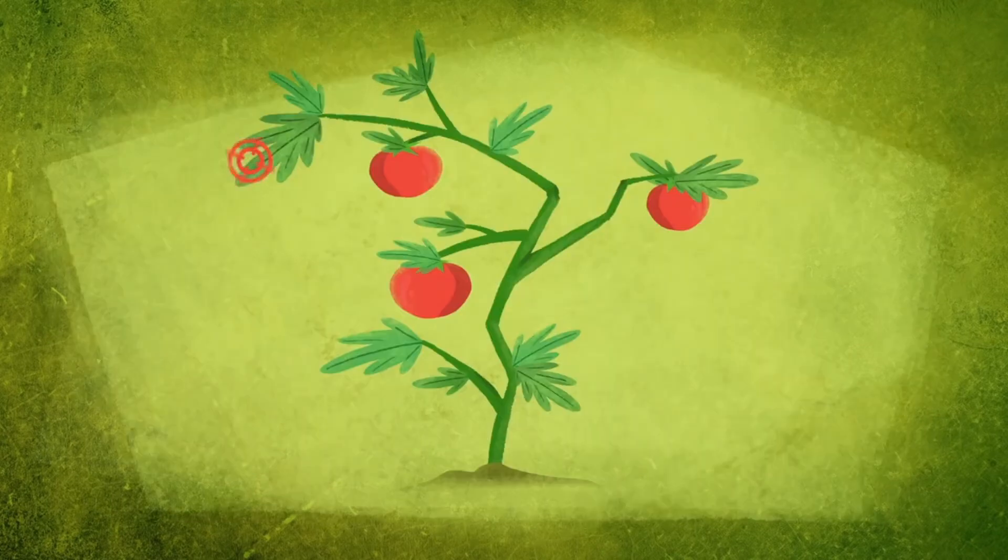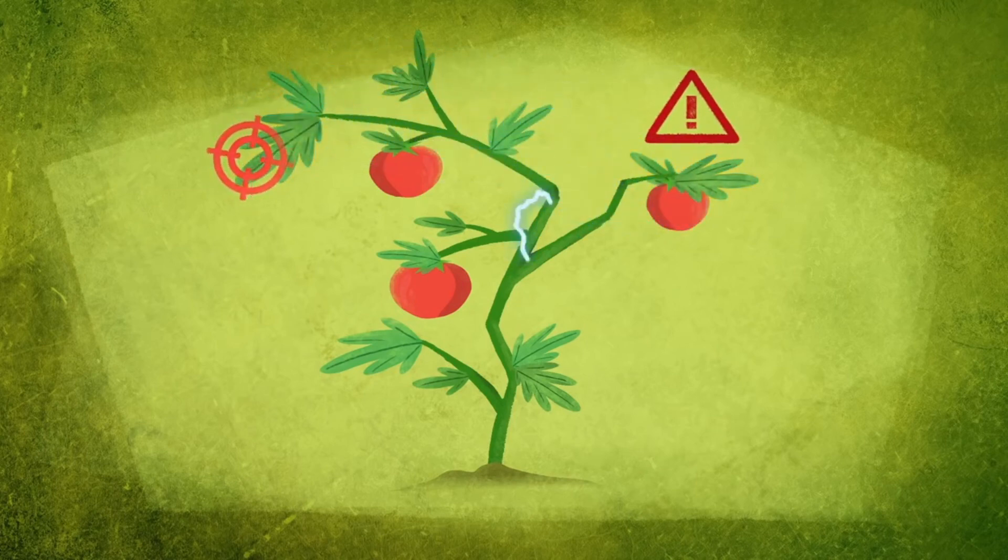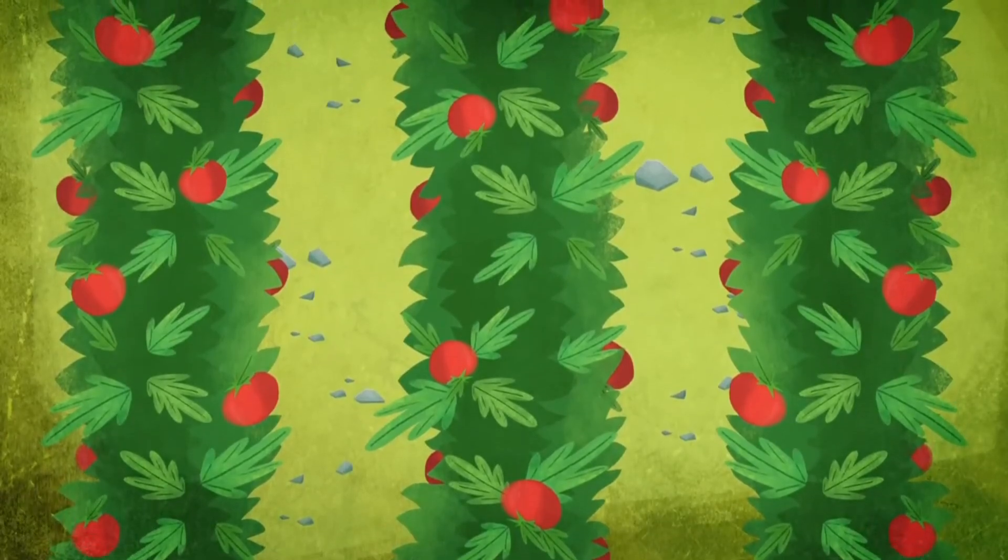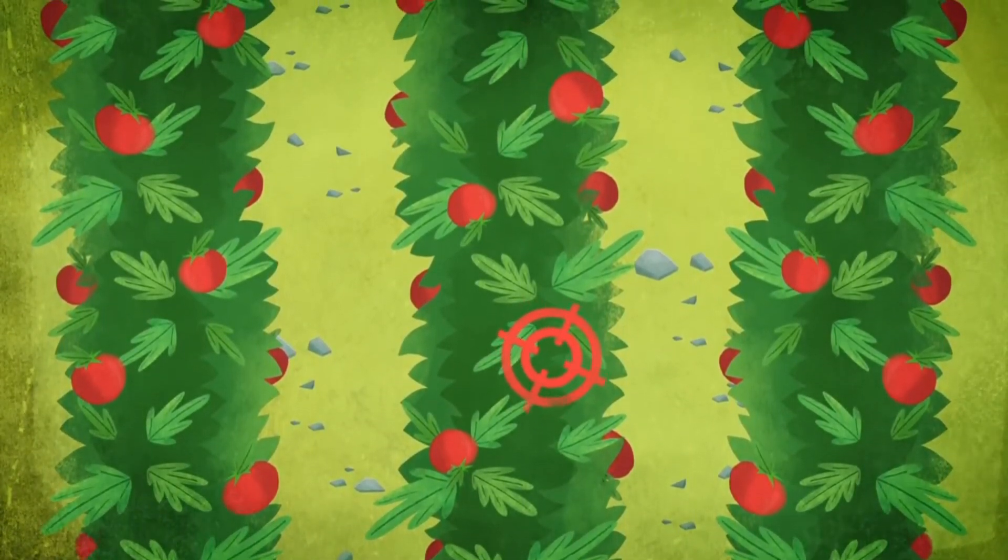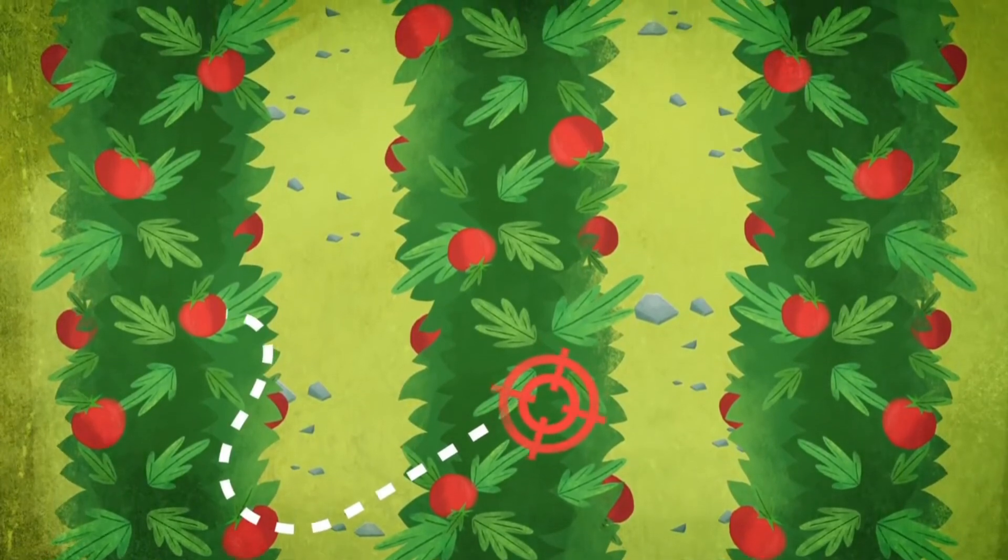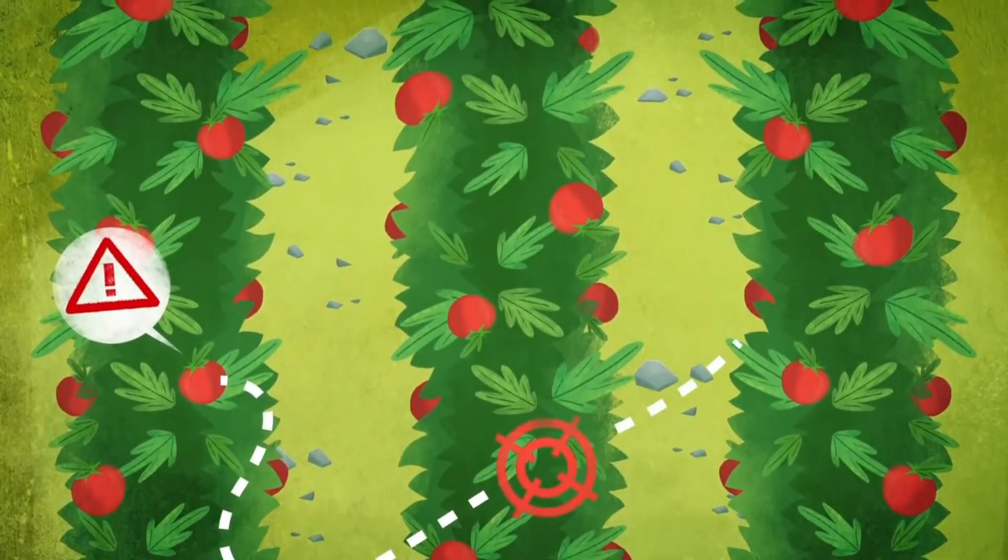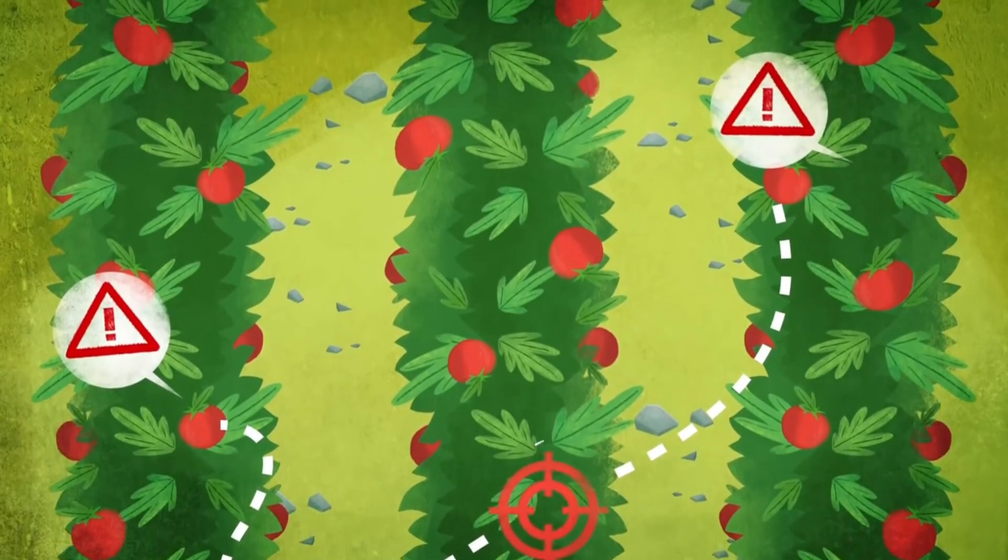An area of a plant under attack can alert other regions using hormones, airborne compounds, or even electrical signals. When other parts of the plant detect these signals, they ramp up production of defensive compounds. And for some species, like tomatoes, this early warning system also alerts their neighbors.